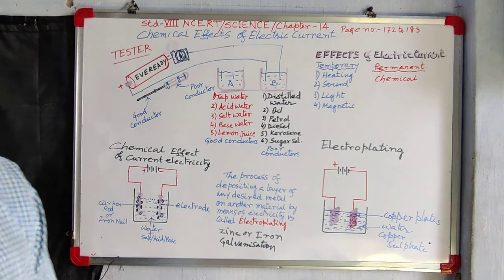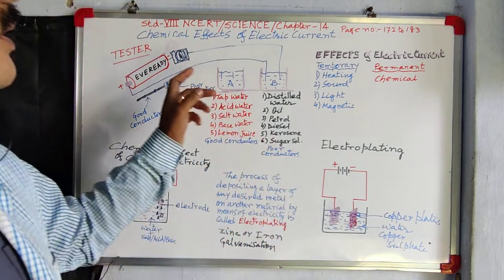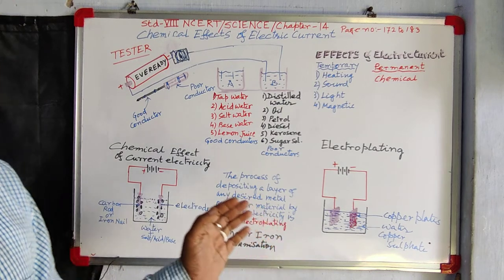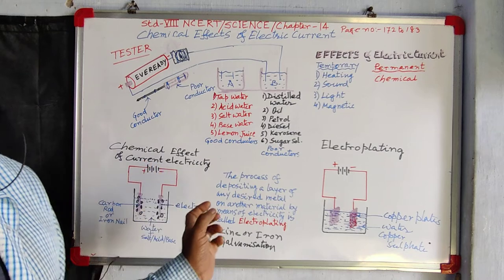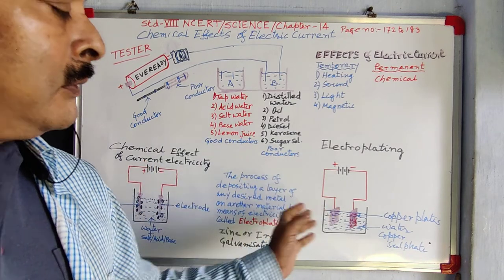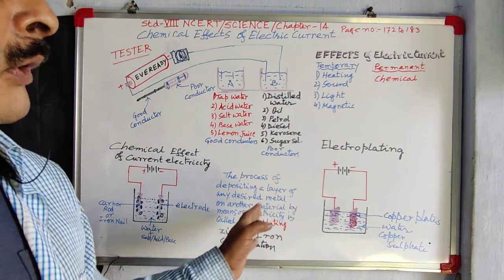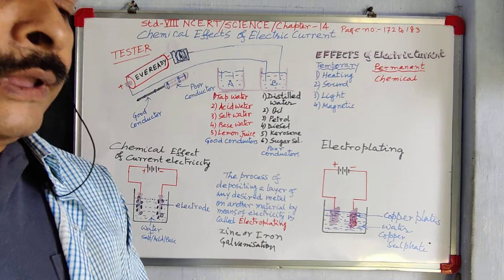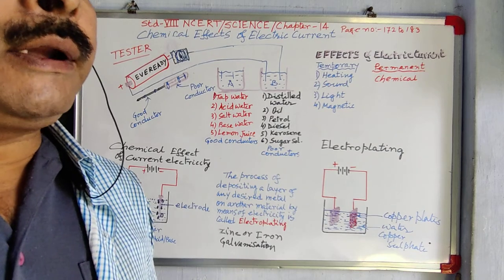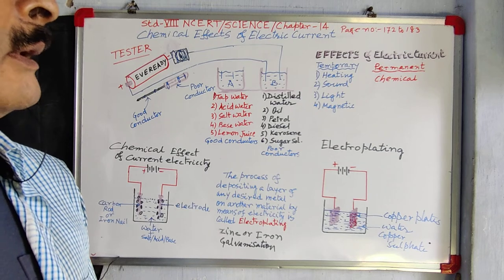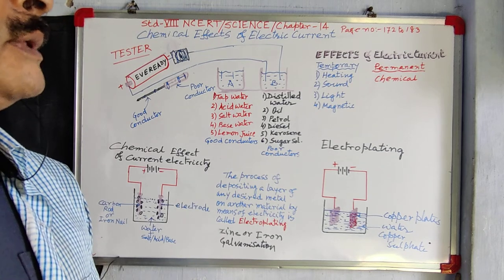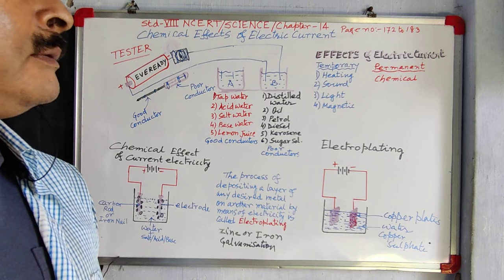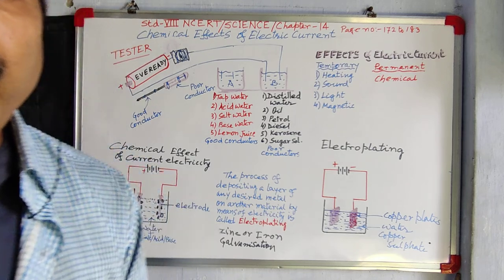These are the chemical effects of electric current. Mainly they are producing bubbles — which have very little use — but depositing a desired metal on another metal, called electroplating, has very good use. Hope this chapter is understood by you. Revise this video once again and it will be clear. Share with your friends. Thank you for watching.